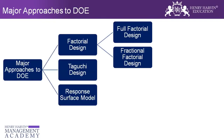There are three major approaches to design of experiment: first is factorial design, then we have Taguchi design, and then the response surface model. However, in the black belt training, we are only going to cover the factorial design, wherein we will cover the full factorial design and the fractional factorial design.